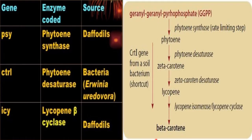Beta-carotene will be synthesized from the geranylgeranyl pyrophosphate pathway. For transformation, they took phytoene synthase gene from daffodil and phytoene desaturase from Erwinia uredovora, which is a bacterium. Then lycopene beta-cyclase was also taken from daffodil. These genes were isolated from daffodil and Erwinia uredovora.